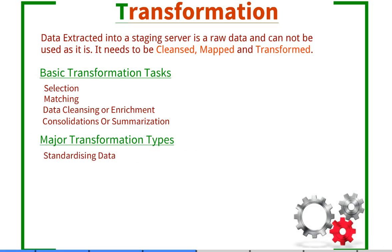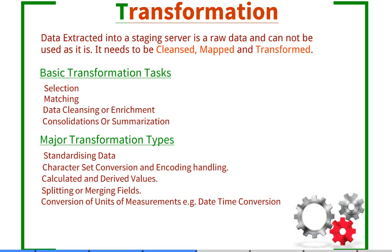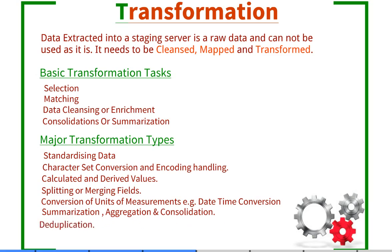Let's look at some sample transformations applied to data. First is standardizing data — data fetched from various sources needs to be standardized before loading into a warehouse. We also perform character set conversion and encoding handling to convert data into a defined encoding used in the data warehouse. We calculate and derive new columns from existing columns, split single fields into multiple fields, and combine fields based on requirements. We also convert units of measurement into a standard format, for example converting date-time or measurement units.